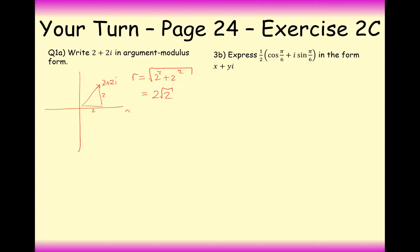And the argument of z, or in other words, theta, is going to equal tan minus 1 of 2 over 2, which is equal to pi by 4. So now we know what r is. Now we know what theta is. All that we have to do now is just write it in argument modulus form.